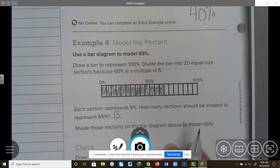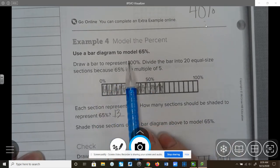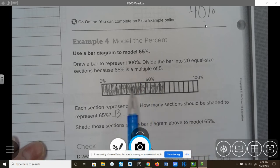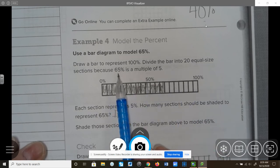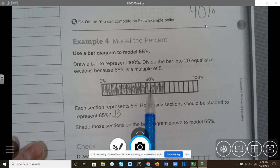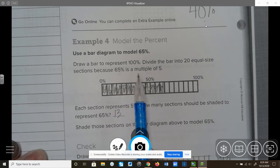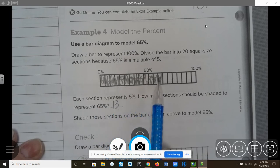On to example four. Model the percent. Use a bar diagram to model 65%. So in this case, it looks like that they have already divided it into 20 equal parts because 65 is a multiple of 5. So what I would just do is I would just count by 5: 5, 10, 15, 20, 25, 30, 35, 40, 45, 50, 55, 60, 65. And I would just go ahead and I would color that in. Or I could think about this and say, 5 times what is 65? Or 65 divided by 5 would equal 13. So there's 13 sections that I had to shade in in order to show 65% on this bar model.